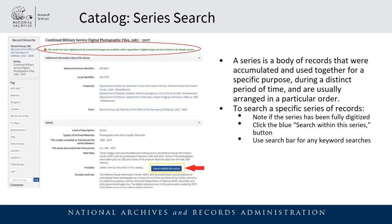If a series has not been fully digitized, you may want to consider visiting us when we reopen to view the records. As you're looking at the series description in our catalog, simply click the blue button labeled 'Search within this series.' You will see search results that only show records in that specific series, and you can then use the search bar at the top left to search for keywords related to your research.